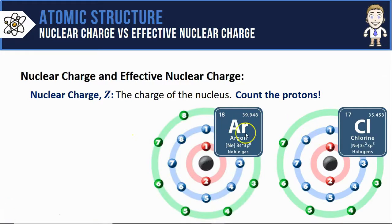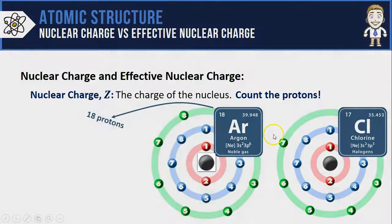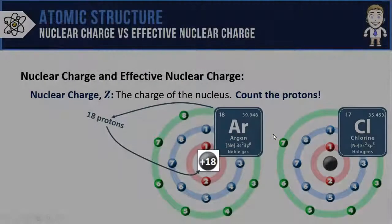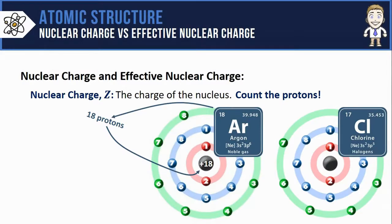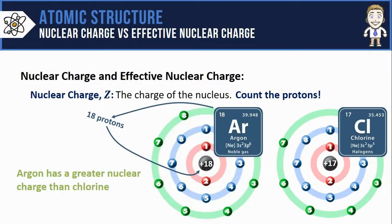Let's apply this by comparing the nuclear charges of these two atoms argon and chlorine. You'd go to the periodic table and see that argon has an atomic number of 18, that means it has 18 protons, that means its nuclear charge is plus 18. If you did the same thing with chlorine, you'd see it has 17 protons, therefore a nuclear charge of plus 17 and you can make the statement that argon has a greater nuclear charge than chlorine.